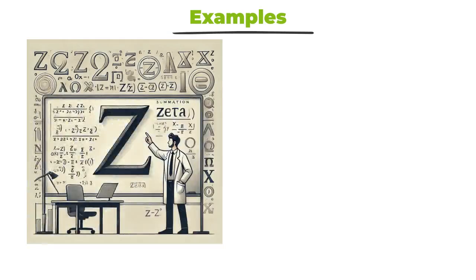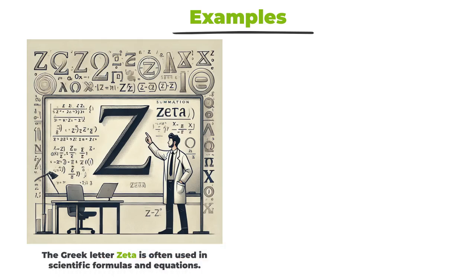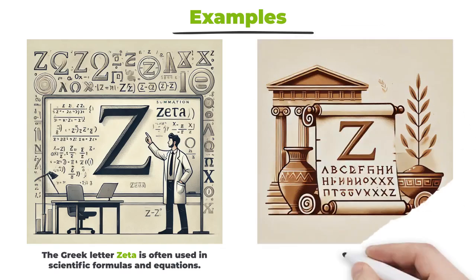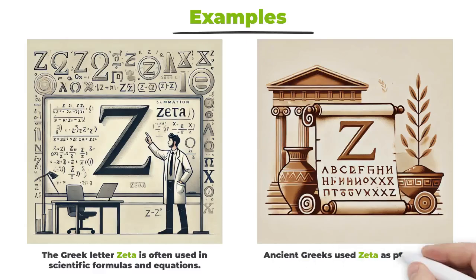The Greek letter Zeta is often used in scientific formulas and equations. Ancient Greeks used Zeta as part of their alphabet for over two millennia, which explains its historical significance.